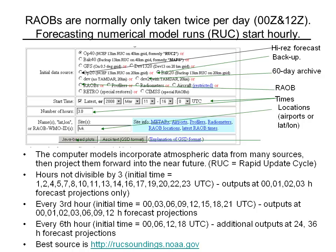Below, you get to choose the time, which would normally be now — checking the box where it says 'latest' will do that, or you can specify a specific time in the boxes on the right. Below that is the number of hours out into the future for a series of forecasts, and at the bottom a box where you can enter a list of locations. These can be raob observation sites, a list of airports, or even latitude-longitude pairs if you want some obscure place where there's no airport.